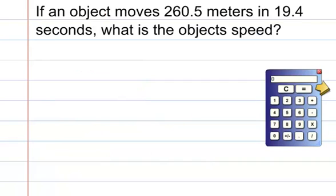Let's take a look at a sample problem to see if we can use the GUESS method to get to the correct answer. If an object moves 260.5 meters in 19.4 seconds, what is the object's speed?